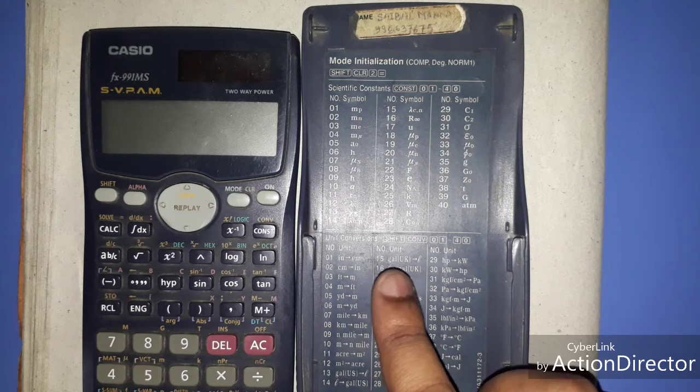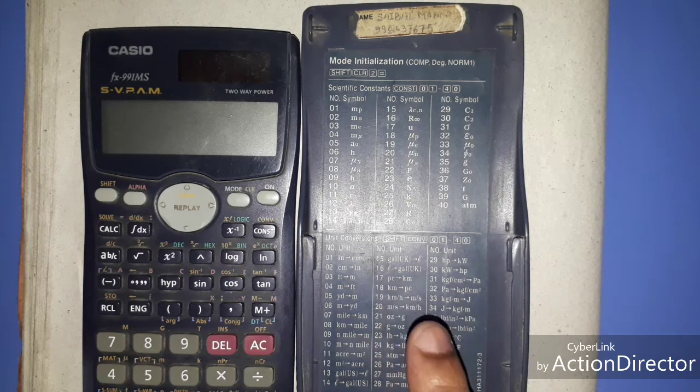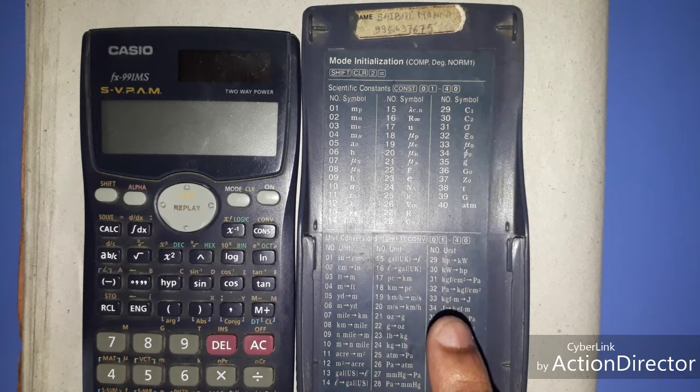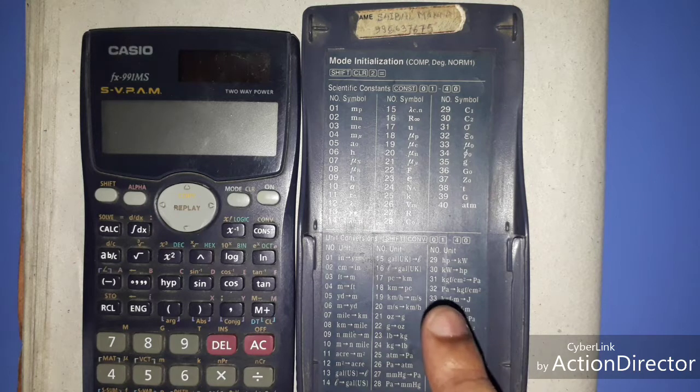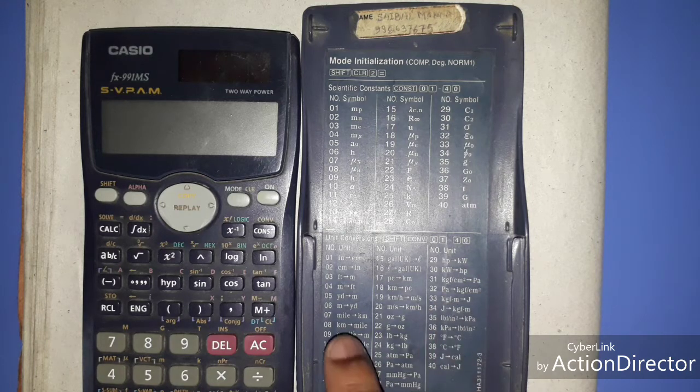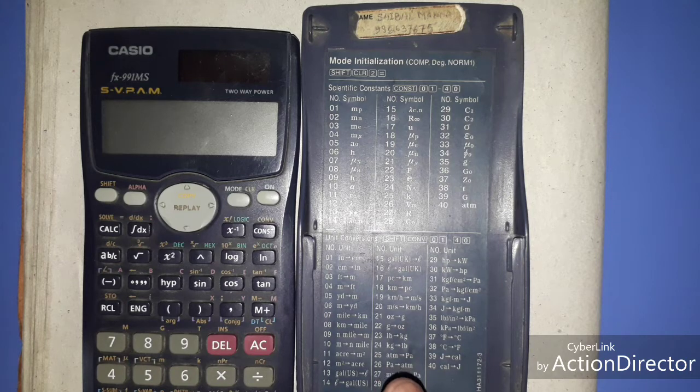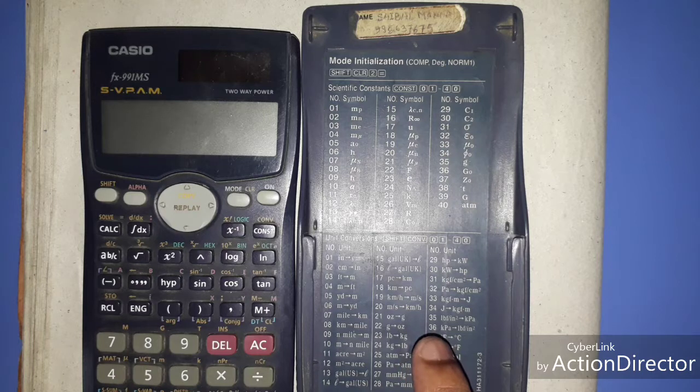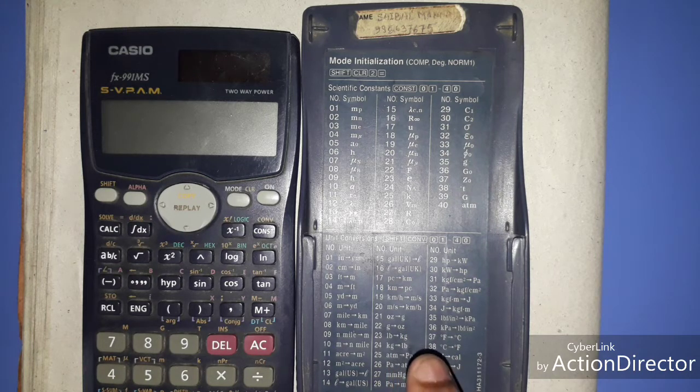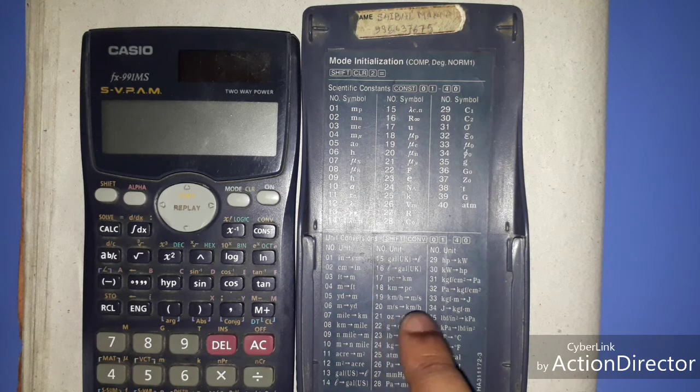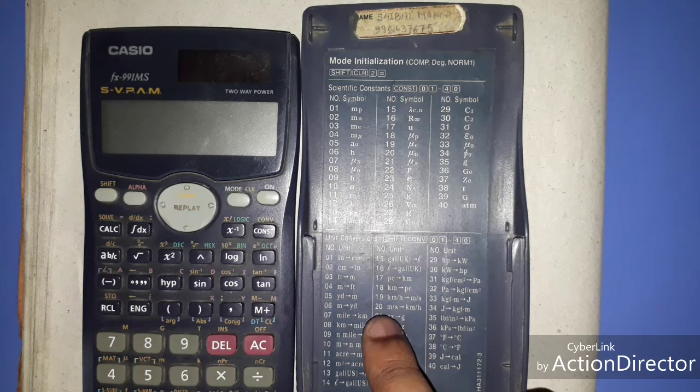It already gives that you have to press Shift, Conv and the code number. This is the respective number. Like if we want to convert kilometer per hour to meter per second, so just press Shift, Conv and its respective number like 20.